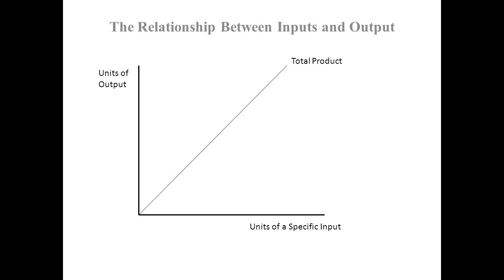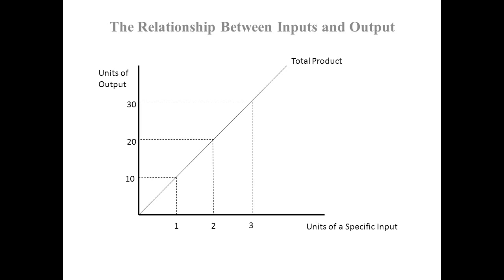The relationship between units of a specific input and the resulting amount of output is direct: the more specific input used, the more output; the less, the less. You'll notice that the production function — the total product curve — starts at the origin, because if there are zero units of that specific input there will be zero units of output. In this case it's a straight line, indicating the relationship is proportional — the marginal product of each additional unit of the specific input is constant.